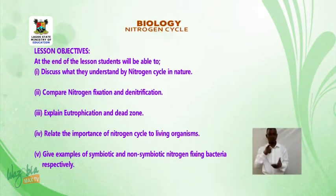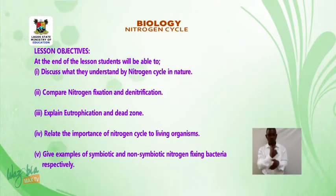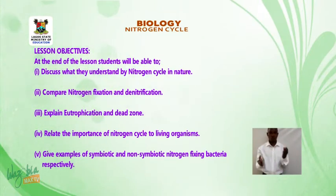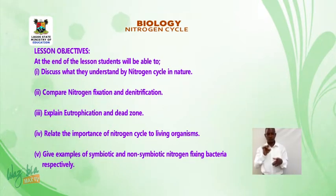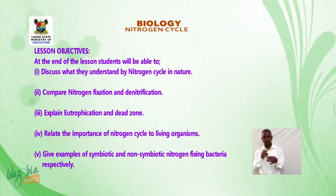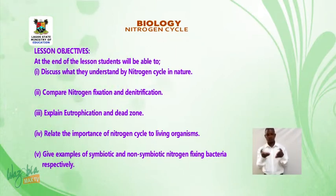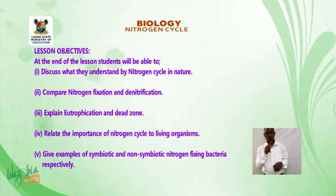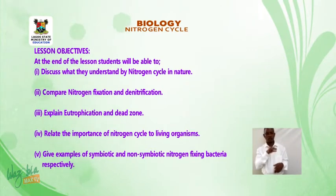Lesson objectives. At the end of the lesson, students will be able to: 1. Discuss what they understand by nitrogen cycle in nature. 2. Compare nitrogen fixation and denitrification. 3. Explain eutrophication and dead zone. 4. Relate the importance of nitrogen cycle to living organisms. 5. Give examples of symbiotic and non-symbiotic nitrogen fixing bacteria, respectively.